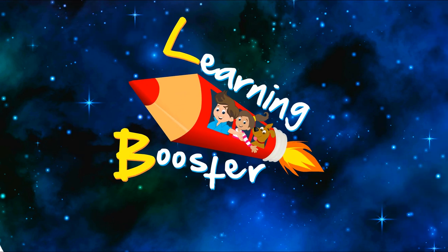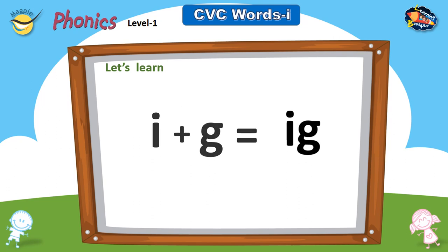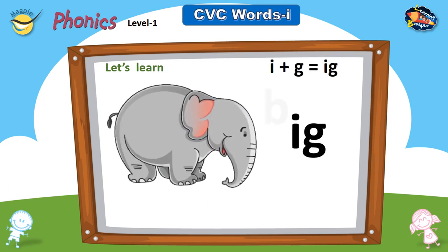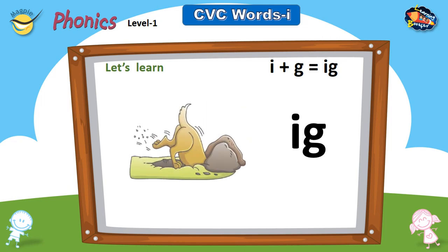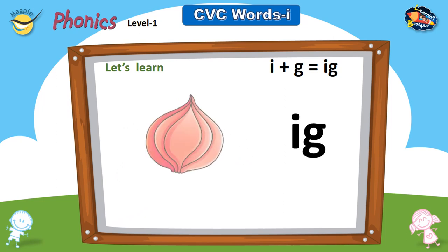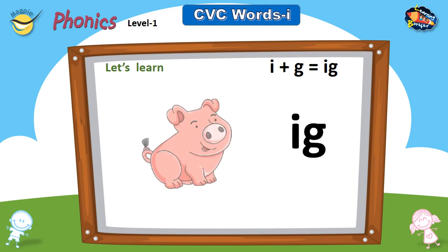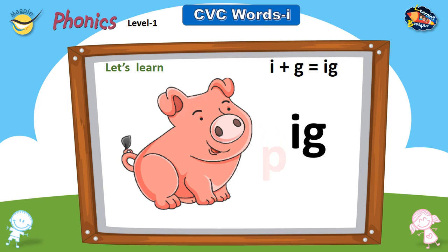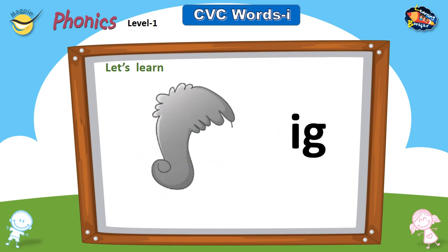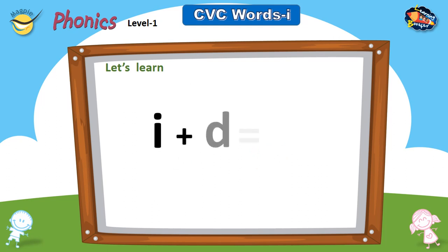Welcome to Learning Booster, your digital learning companion. CVC words — I. Let's learn: I plus G equals -ig. Big. Fig.